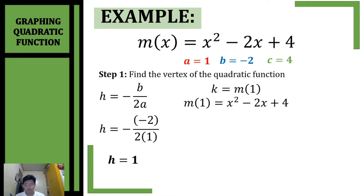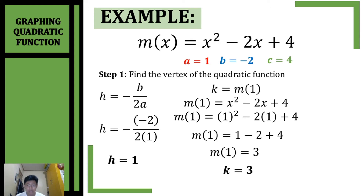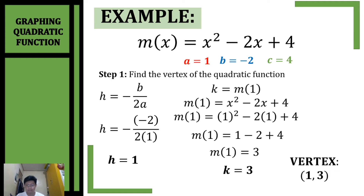To find k, I substituted the value of h into our original function. Substituting 1 and replacing all the variable x by 1, simplifying and combining like terms, our k will be equal to 3. So our vertex will be (1, 3).